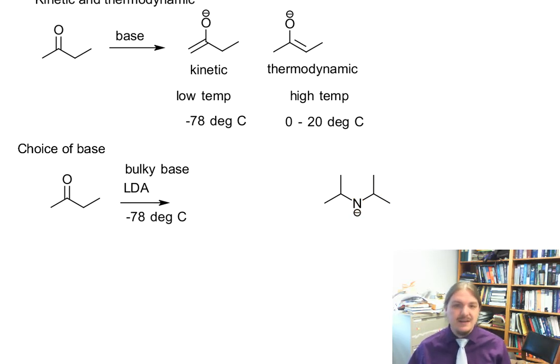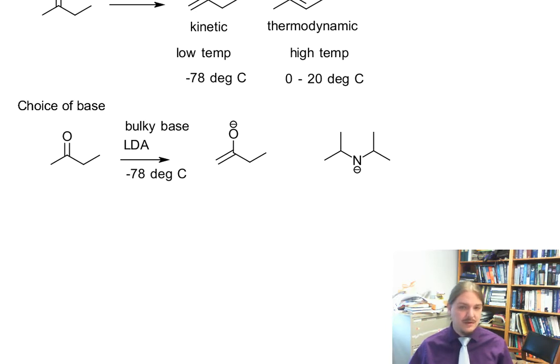And sterically hindered things tend to prefer the kinetic product for steric reasons. So you're going to get a preference of kinetic enolate in bulky base.